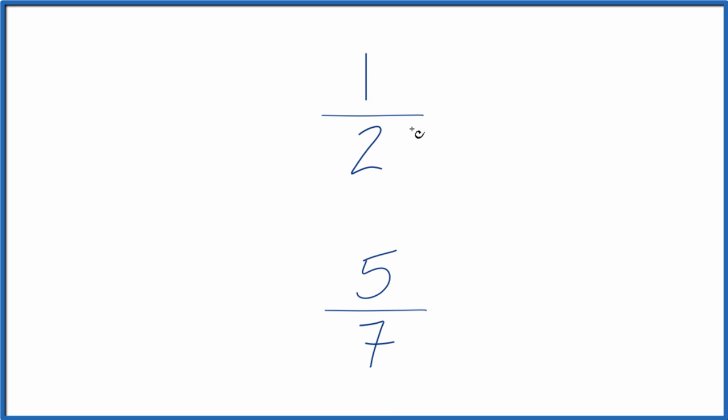We need to find a common denominator, something that 2 and 7 will both go into evenly. If we have a common denominator, we can just compare the numerators, figure out whether 1 half is greater than 5 sevenths or 5 sevenths is greater than 1 half.